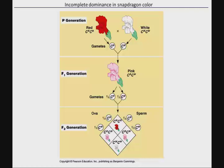But if you self-cross the pink plant, now you have more options — a gamete that's either red or white. When you combine them with a Punnett square, you get that 1:2:1 ratio as both the genotypic and phenotypic ratio. The beauty of incomplete dominance is that genotype and phenotype are all visible: if it's red, the genotype must be RR; if it's pink, it's RW; and if it's white, it's WW.